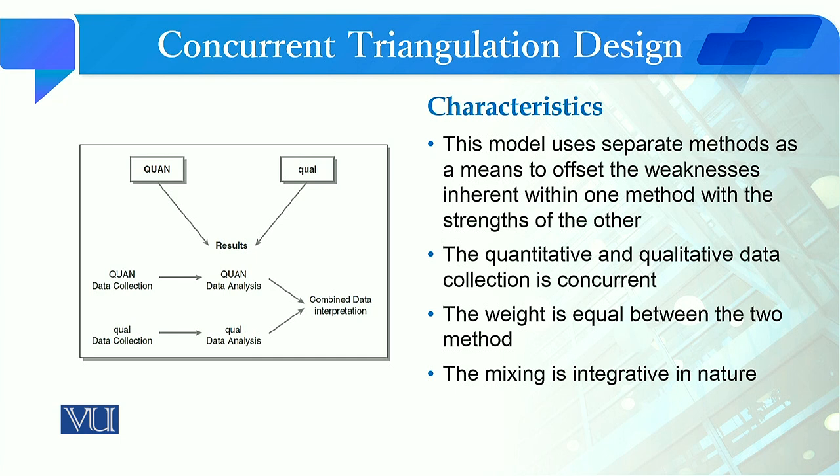If I talk about the characteristics, this model uses separate methods as a means to offset the weakness inherent within one method with the strength of the other. When we use this model, we actually use it with the motivation that we are going to manage the weaknesses of one study design by using the other.